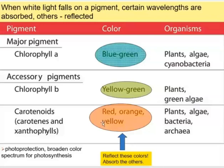Why do we have accessory pigments? They serve for photoprotection — they help distribute and dissipate energy — and they broaden the color spectrum for photosynthesis, meaning we can absorb a greater amount of energy overall.